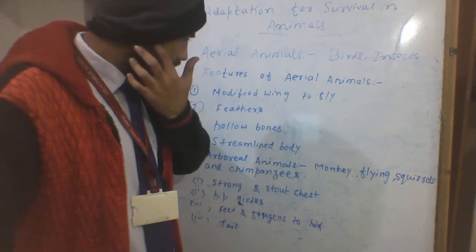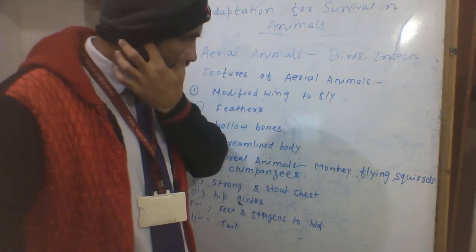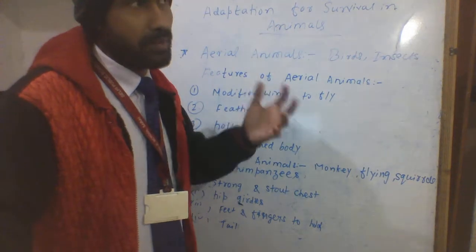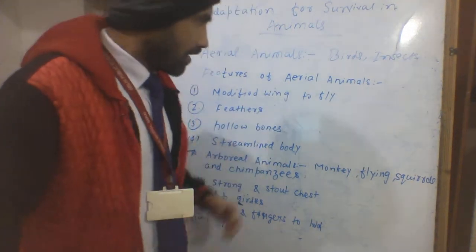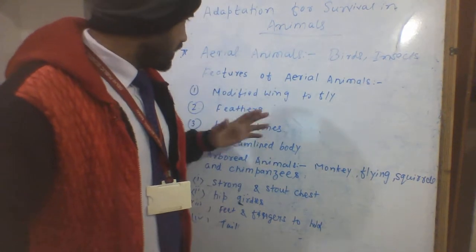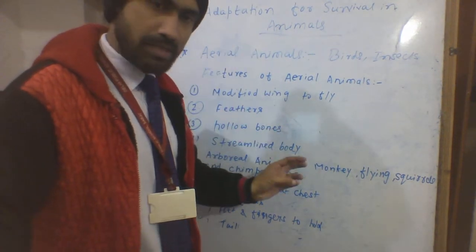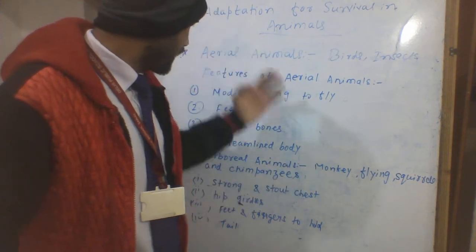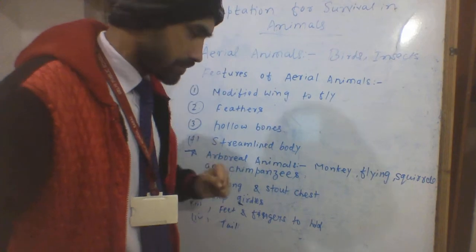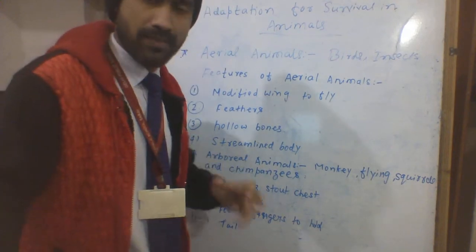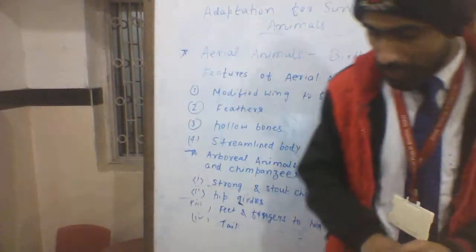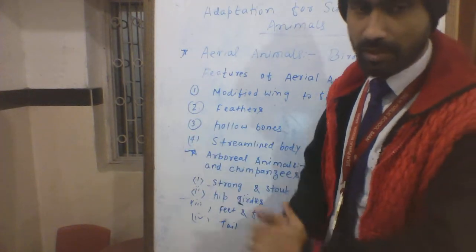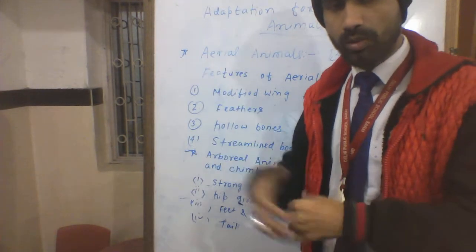We have now covered the adaptive features of terrestrial, aquatic, aerial, and arboreal animals. In the next video, we will talk about food habits and camouflage — how animals protect themselves.